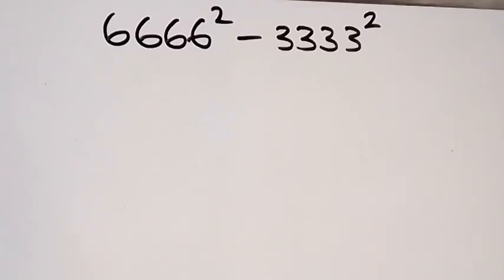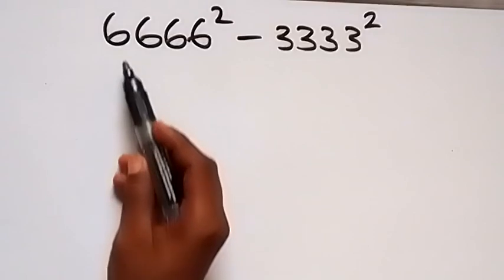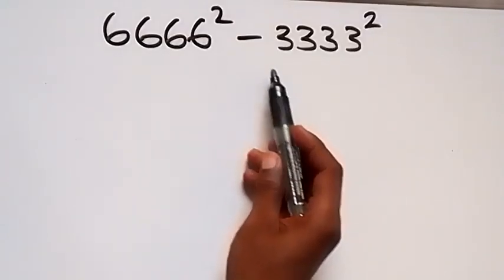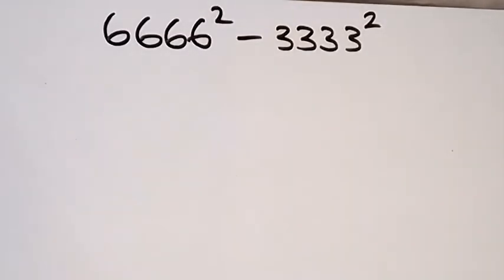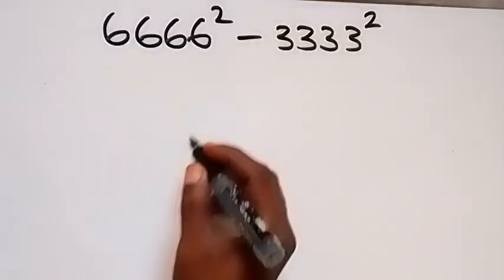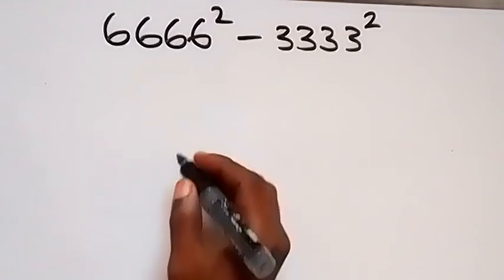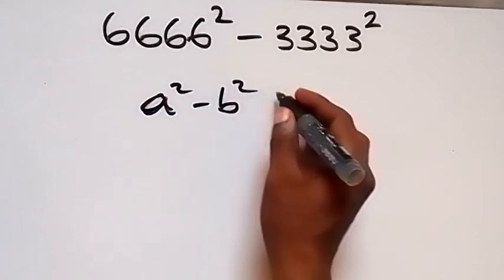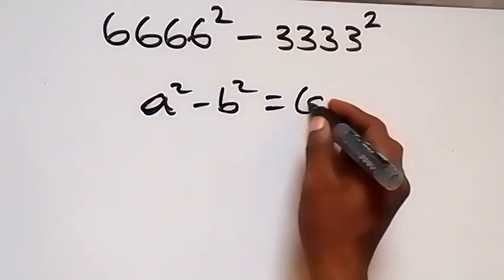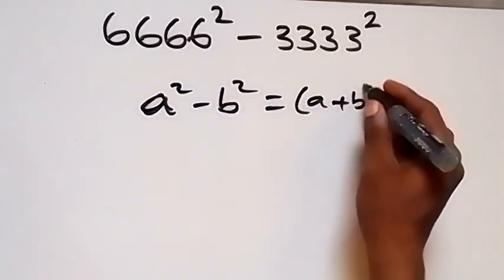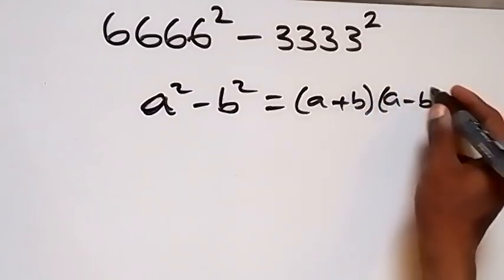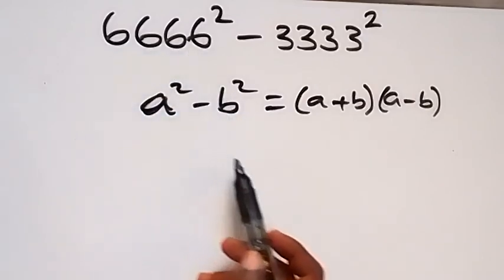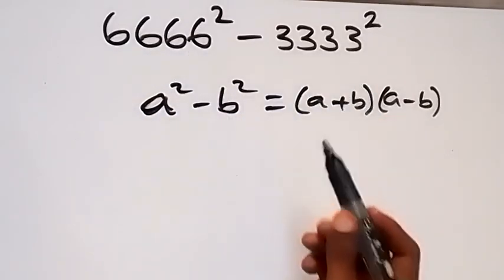Hello, you are welcome. How to solve this problem: 6666 squared minus 3333 squared. From here we can use the difference of two squares, which is a squared minus b squared equals a plus b multiplied by a minus b. So when we treat 6666 as a and 3333 as b.